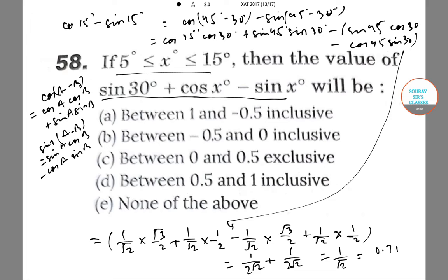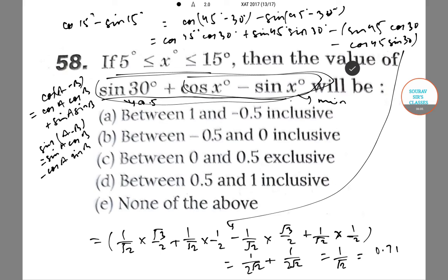0.71 is the minimum value of cos X minus sin X. Now, sin 30 is equal to 0.5, so the minimum value of this expression would be 0.71. Therefore, none of the above options are correct — Option E.